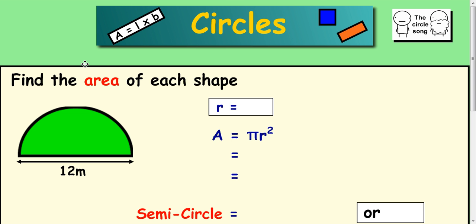In this lesson, we're going to look at how to calculate the area of some more complicated shapes. So in the first example here, we have a semicircle. So we have to calculate the area of the semicircle.